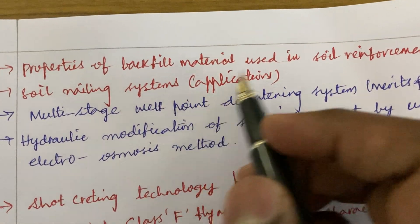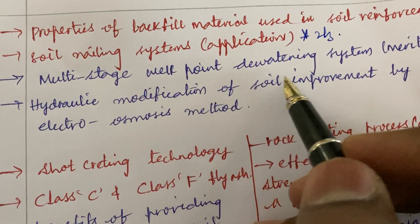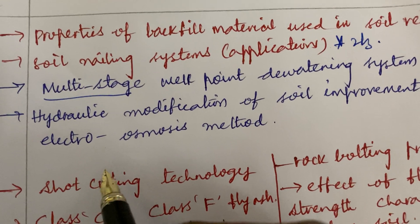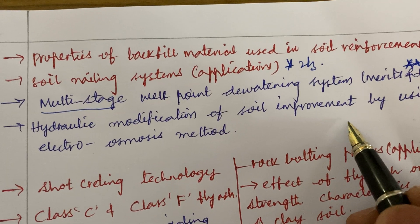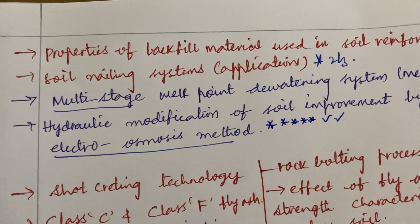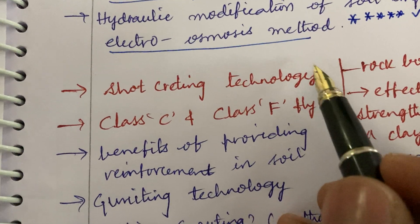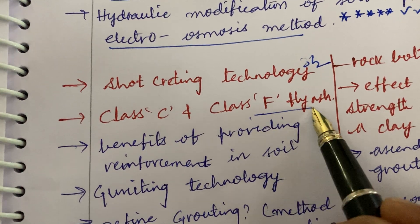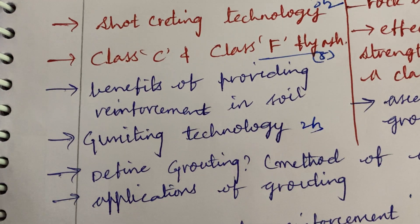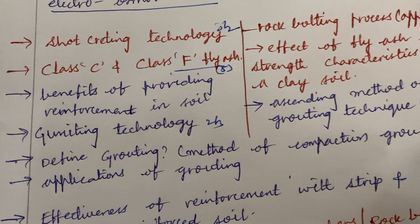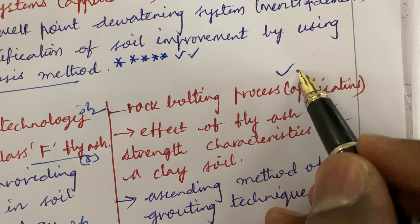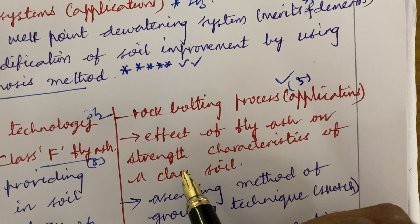Properties of backfill material used in soil reinforcement, soil nailing system and its application is a 2 to 3 mark question. Multi-stage well point dewatering system — single stage or multi-stage — related to merits and demerits is also very important. Hydraulic modification of soil improvement by electroosmosis method is a topmost question expected this time. Short crating technology is a 2 to 3 mark question. Class C and Class F fly ash is a 5 mark question. Benefits of providing reinforcement in soil and knitting technology is a 5 to 3 mark question. Define grouting and the method of compaction grouting and the applications of grouting is a topmost question. Rock bolting process and its application is a 5 mark question.